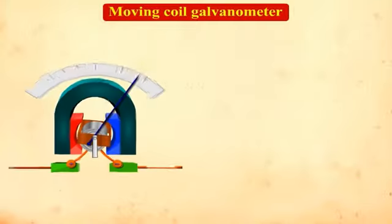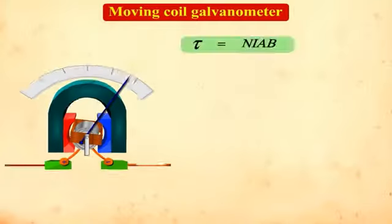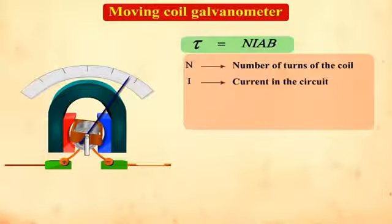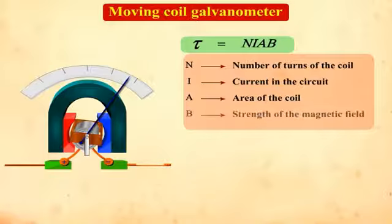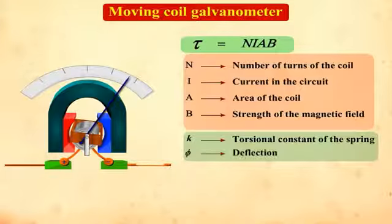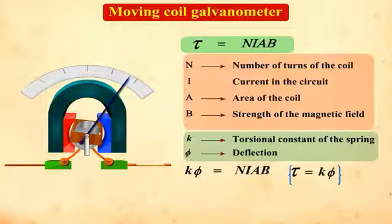The torque is equal to NIAB, where N is the number of turns of the coil, I is the current in the circuit and thus the coil, A is the area of the coil, and B is the strength of the magnetic field. If small k is the torsional constant of the spring and phi is the deflection, we have k·phi = NIAB.